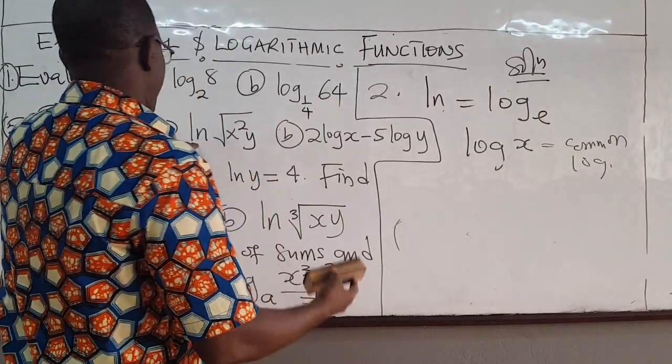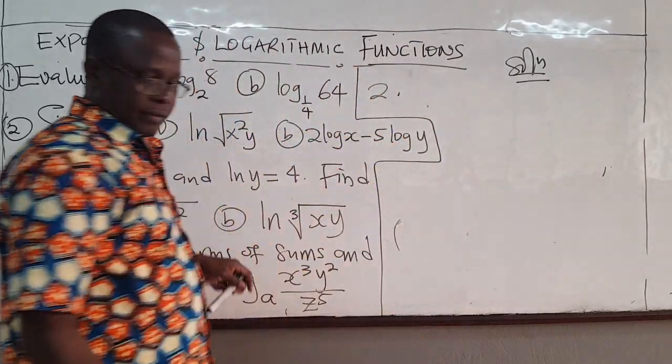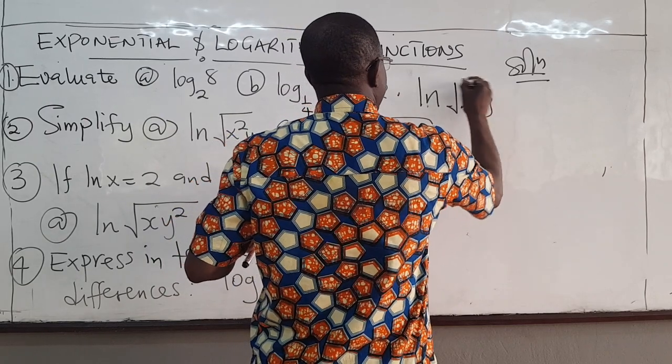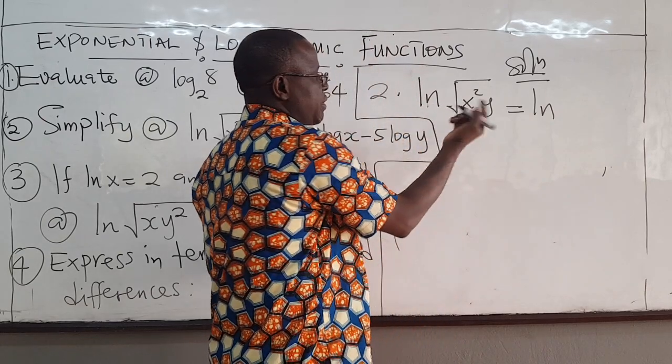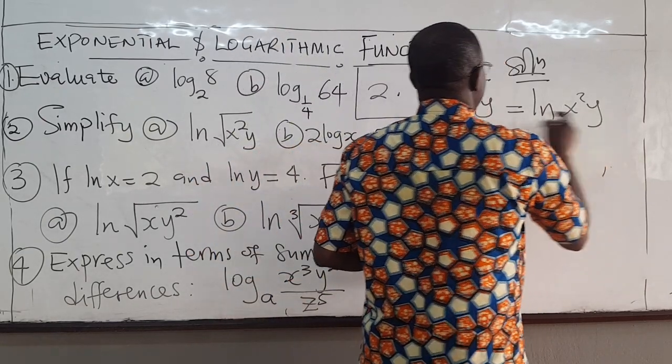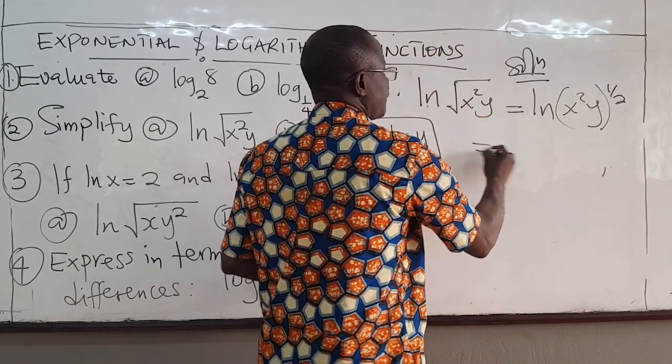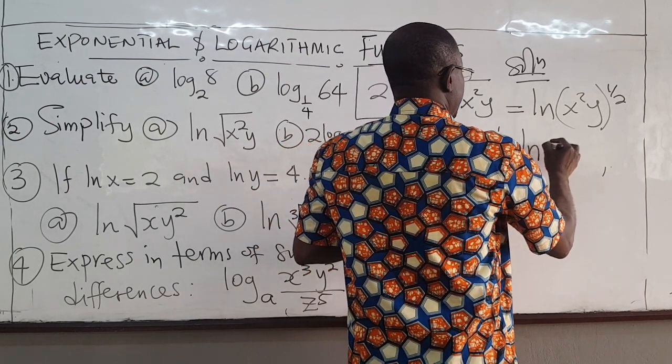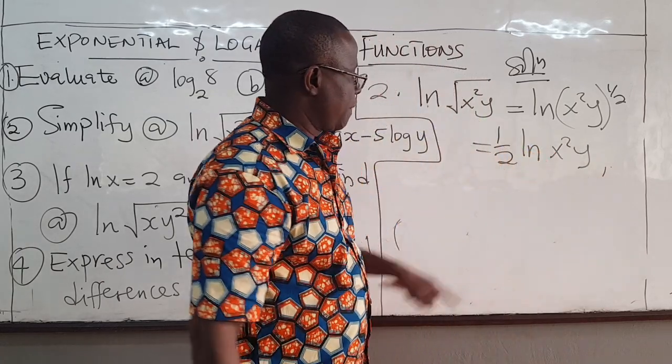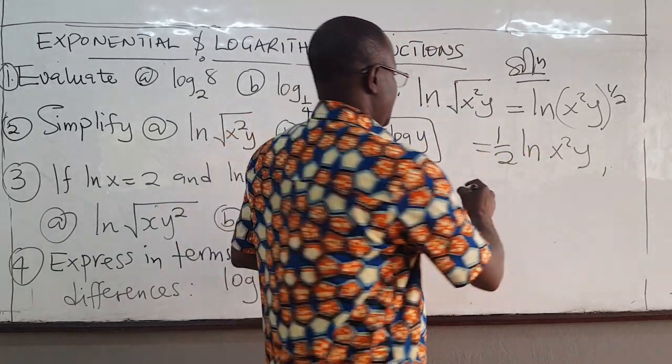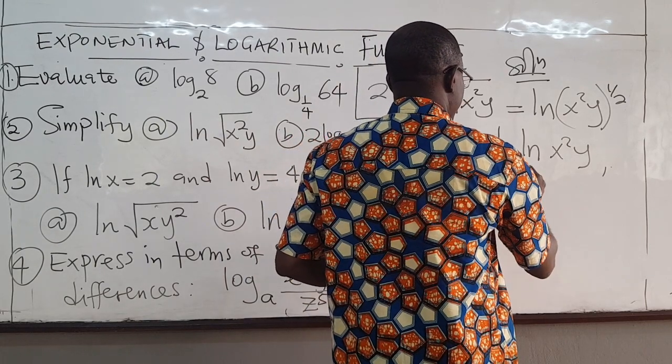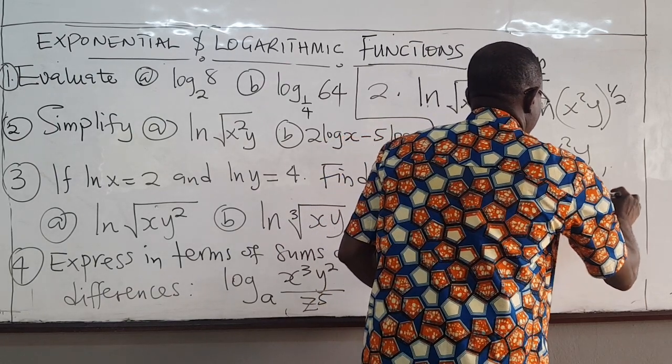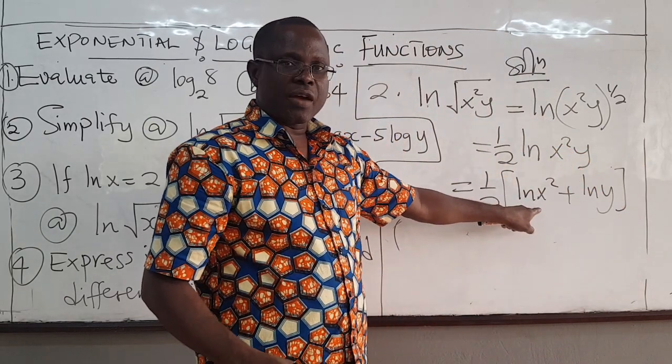Okay? Good. So, ln. Ln of this, square root x squared y, is the same as ln, log base e, of x squared y. The square root is the same as to the power of 1/2. Okay? So, you can bring this 1/2 down here. You get ln of x squared y. This is a product, so we can split it. We can rewrite this as 1/2. If you want, you can put it right here. This, we can write as ln x squared plus ln y.